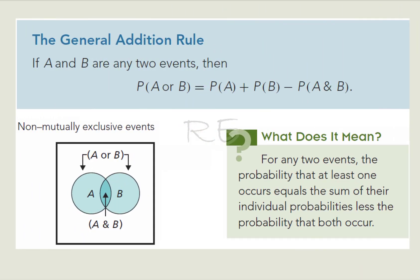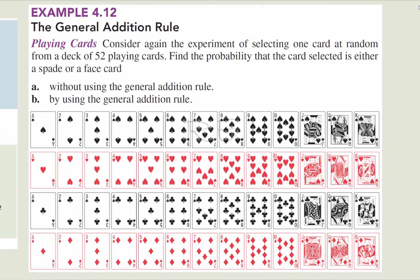For any two events A and B, P of A or B is equal to P of A plus P of B minus P of A and B. This is known as the General Addition Rule. If they are mutually exclusive events, P of A and B is equal to 0.